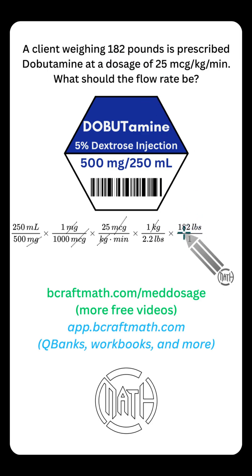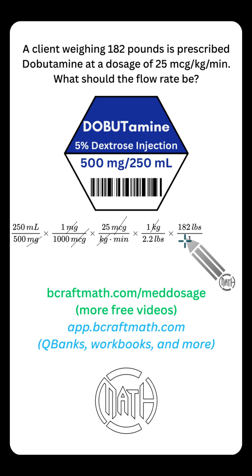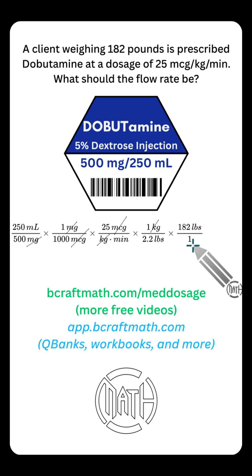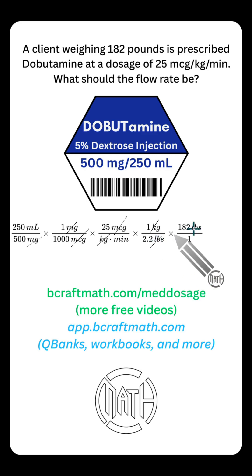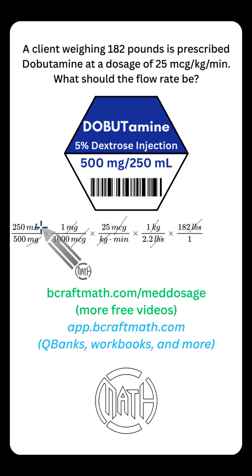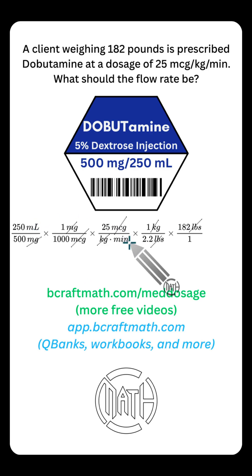This fraction represents 182 pounds — that one is for that single client; it's more of a placeholder. We can cancel out our pounds. But if we stopped right now, we would have milliliters per minute. We need milliliters per hour, which is why we need one more conversion.